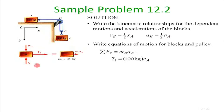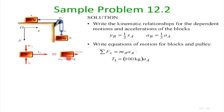Drawing the free body diagram for mass A: tension T₁, normal reaction N (frictionless), and weight. The kinetic diagram gives Σforces = mA·aA in the horizontal direction, so T₁ = mA·aA. Since the pulleys are frictionless and massless, tension remains constant throughout, so these tensions also remain constant.